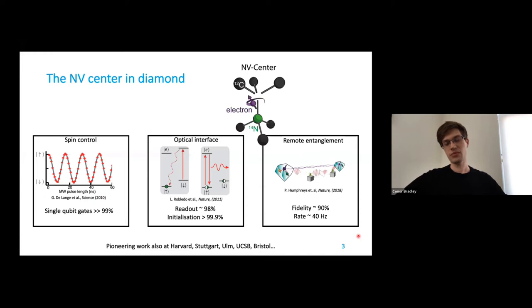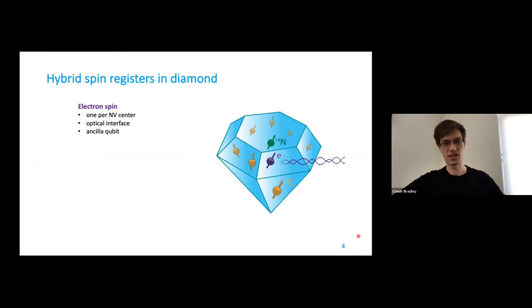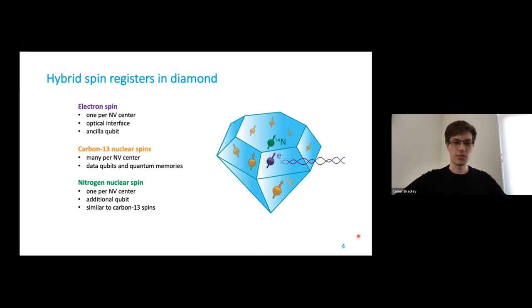So these are some really cool features that we can build upon. And in our group, what we do is we combine this with these hybrid spin registers. So we take this electron spin of the NV and we combine this with carbon-13 nuclear spins. About 1% of the diamond lattice is carbon-13. This means that each NV center sits in a bath of carbon spins and we can interact with some subset of them. And the ones we interact with, we can use those as data qubits and as quantum memories. Finally, alongside the carbon spins, we have one extra nuclear spin, that's the nitrogen spin also of the NV. And you can see this kind of like a bonus qubit similar to the carbon-13s.